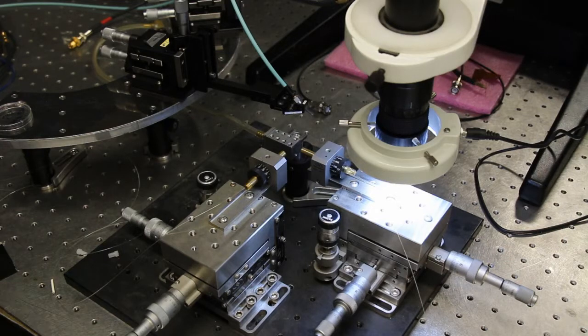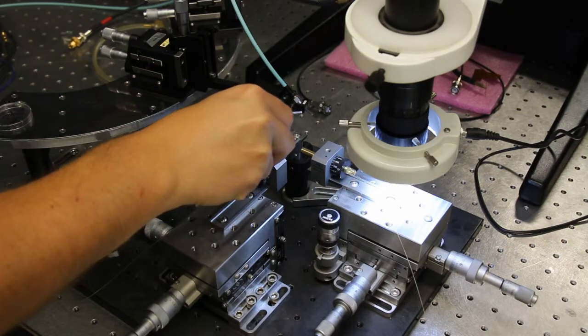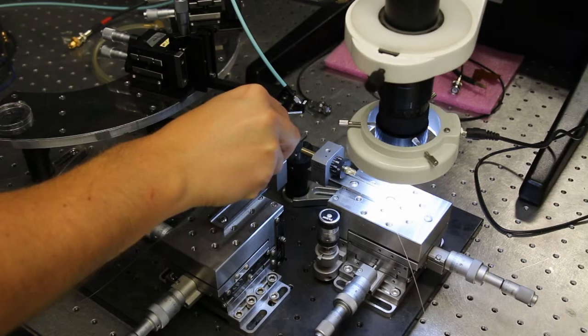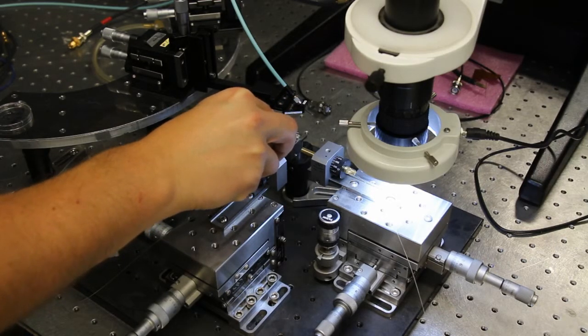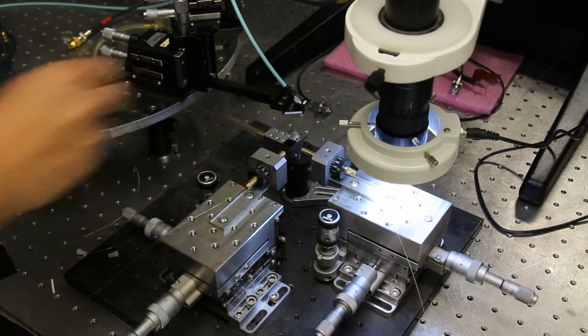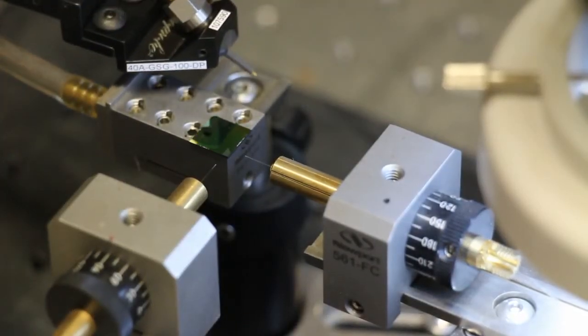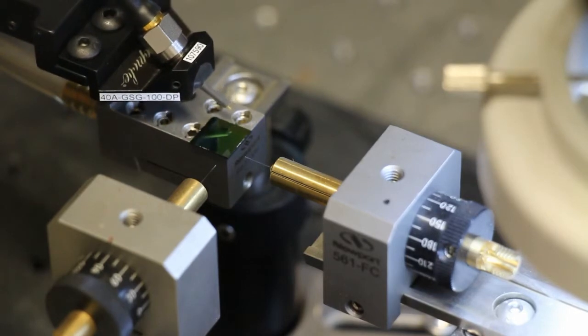First, we mount the sample on a vacuum holder. Next, we move the lens fiber and electrical signal ground signal probe towards the sample.